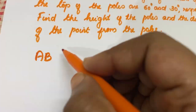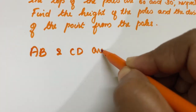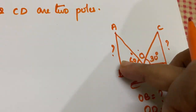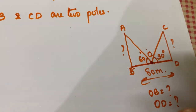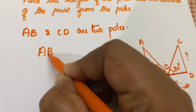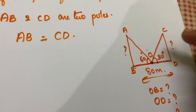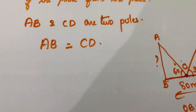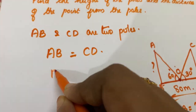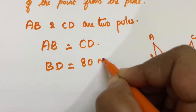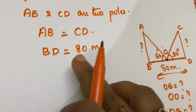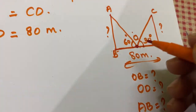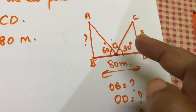A, B and C, D are the two poles. The height is equal — both poles have the same height. So AB is equal to CD. BD is equal to 80 meters wide. We need to find the right angle triangle for this problem.